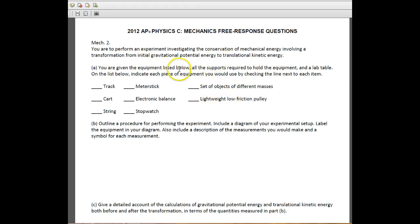So the first thing that you have to do is list any equipment that you would use in order to perform this experiment where you're looking at conservation of mechanical energy. You're transforming gravitational potential energy to kinetic energy. Don't let the word translational throw you here. They're just trying to make sure you understand it's not rotational energy.